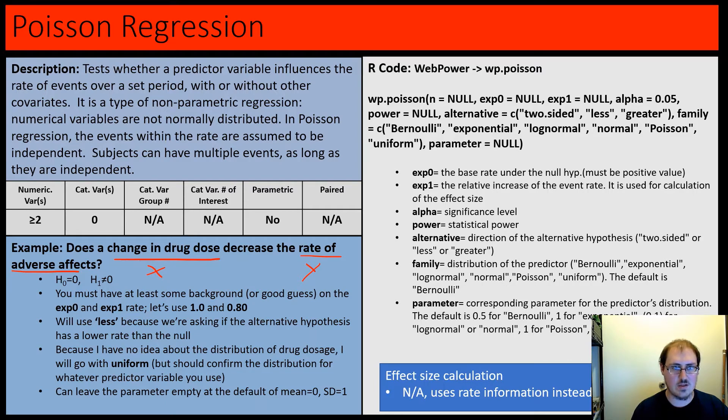Like logistic regression, Poisson has a lot going on. It has these rates instead of proportions. There's the base rate under the null - this has to be positive - and then the relative increase in the event rate. This is how you get the analog of effect size. We don't really have an actual effect size that we calculate; the program does it.